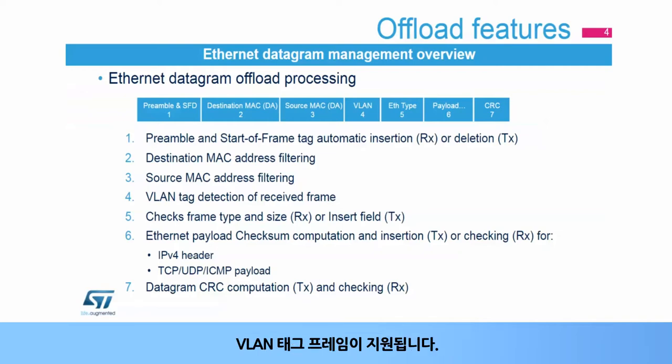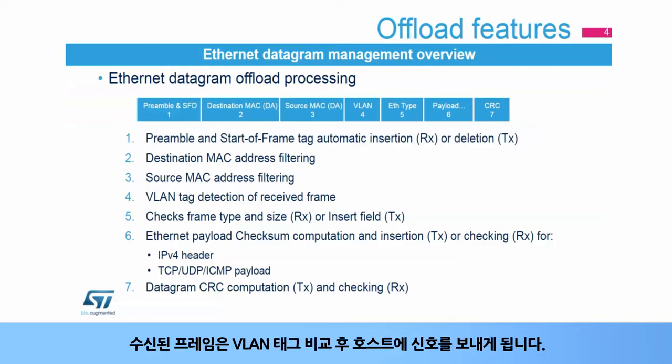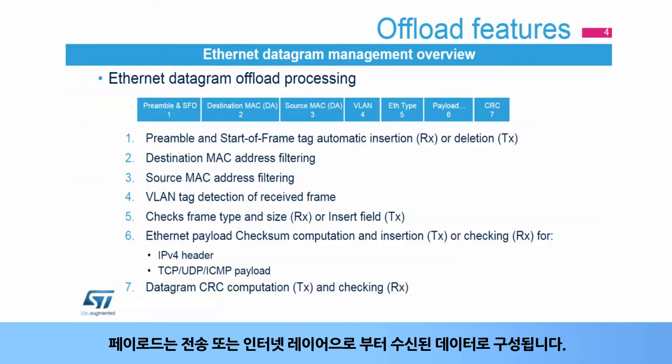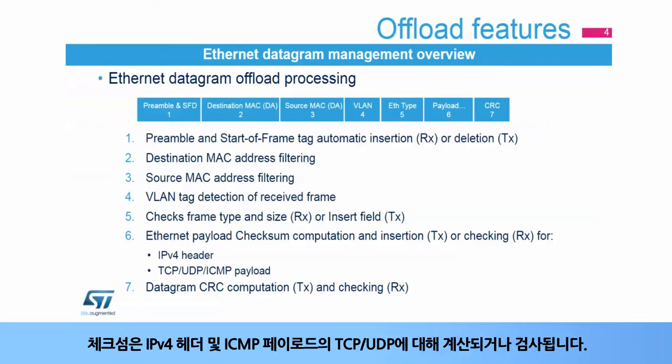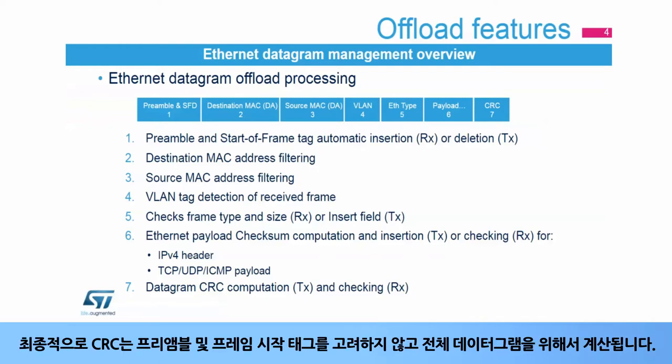VLAN tagged frames are supported; received frames are signaled to the host after VLAN tag comparison. Payload is composed of data from transport or Internet layers. The checksum is computed or checked for IPv4 headers and TCP, UDP, or ICMP payload. Finally, the CRC is computed for the whole datagram without taking into account the preamble and the start of frame tag.